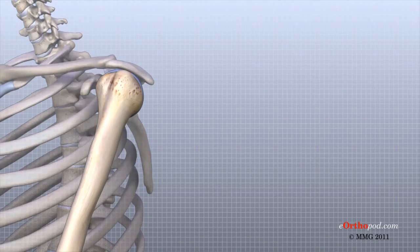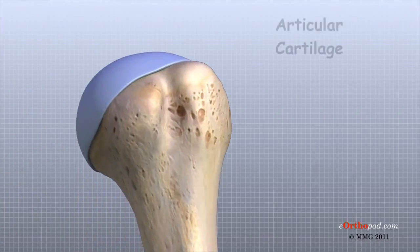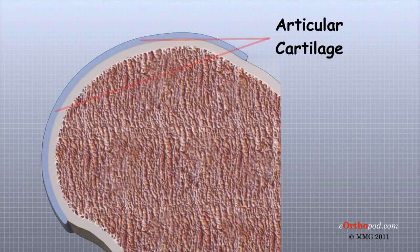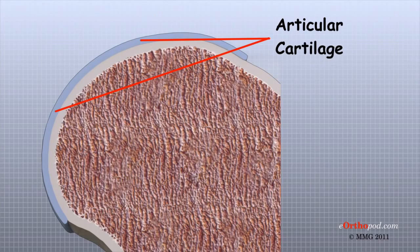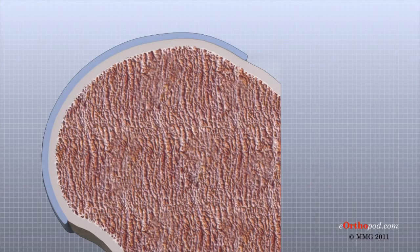Articular cartilage is the material that covers the ends of the bones of any synovial joint. It is about one quarter of an inch thick in most large, weight-bearing joints, and a bit thinner in joints such as the shoulder, which don't normally support weight. Articular cartilage has a rubbery consistency and is very slippery, allowing joint surfaces to slide against one another with very little friction. It functions to absorb shock and provide an extremely smooth surface to make motion easier.